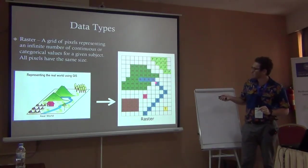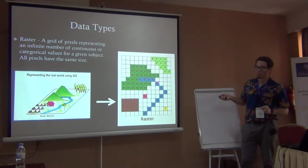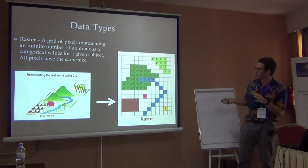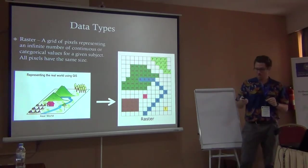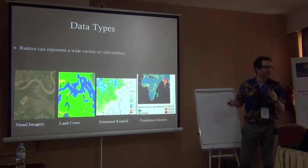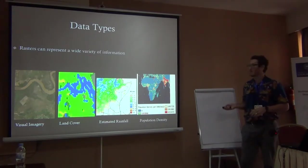We can only use the squares that we have, so we can't control the actual real outline. We have to get it as close as possible with the width of the squares that we have. These are some of the advantages and disadvantages between raster and vector.